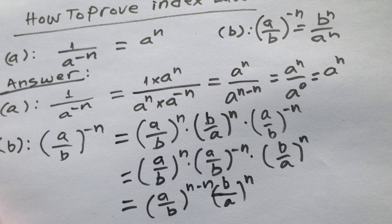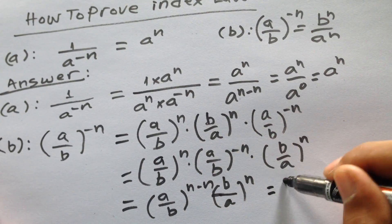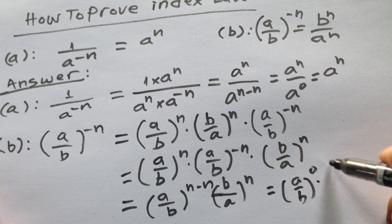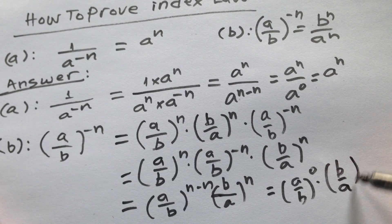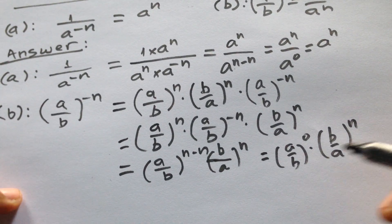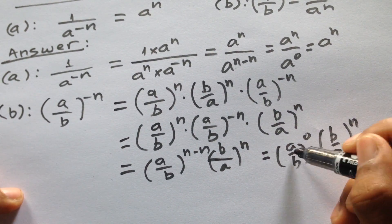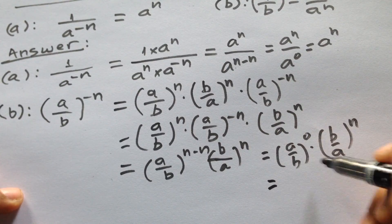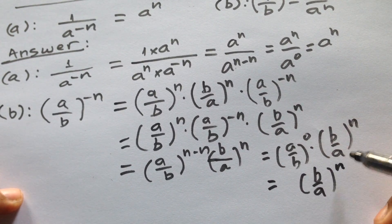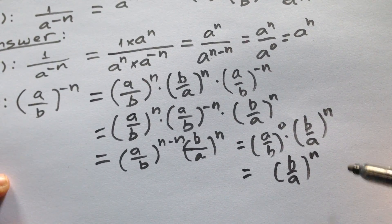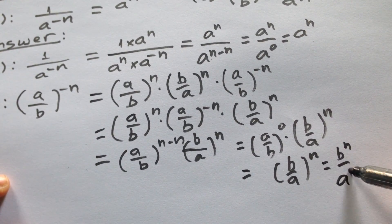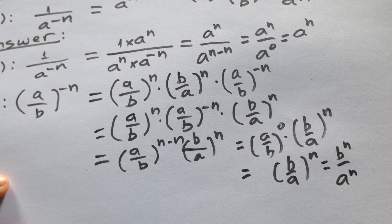So we get a divided by b to the power 0, and here b divided by a to the power n. Then we get this one, so it will be b divided by a to the power n. So we get b to the power n divided by a to the power n.